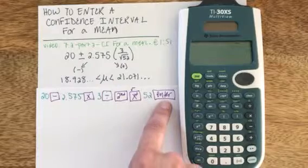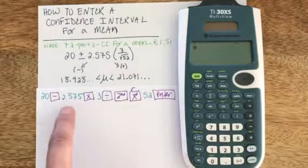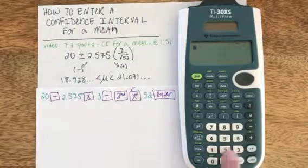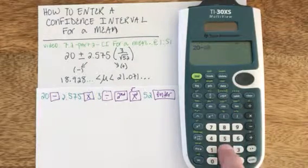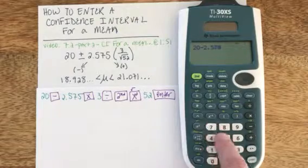I have written the buttons I'll be entering on the calculator in purple and the blue values are specific to this problem. So my calculator is on, it's cleared, and I've got 20 minus 2.575.